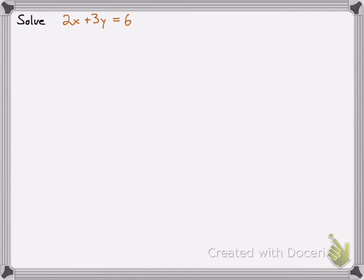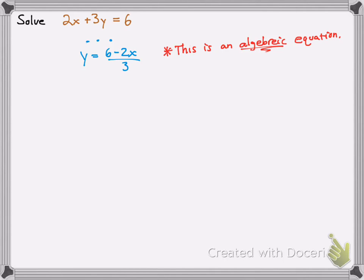So, solve: 2x plus 3y equals 6. Take a moment, pause the video, see if you can figure it out. It seems pretty straightforward — like a trick question. Well, many typical answers from people are they just solve for y and say y equals 6 minus 2x over 3. But this is an algebraic equation, and solving implies finding solutions — and that is not a solution.